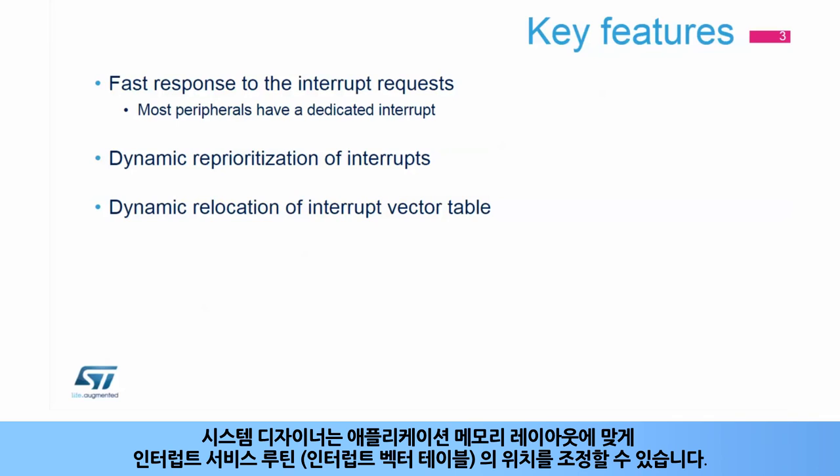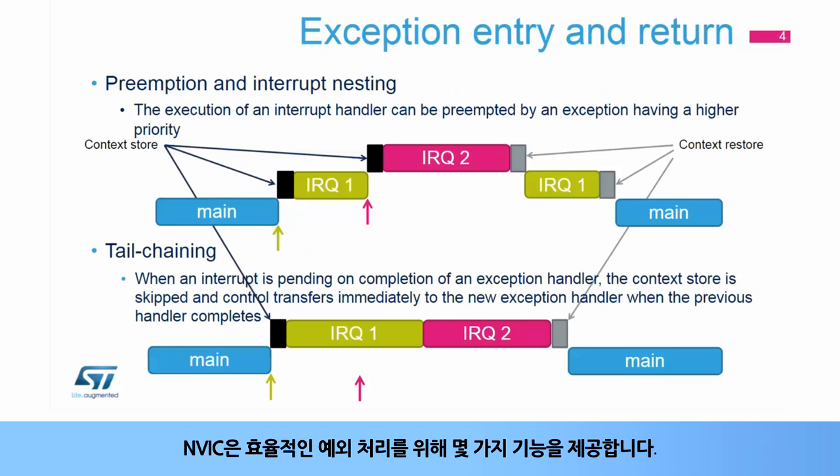The interrupt vector table can also be relocated, which allows the system designer to adapt the placement of interrupt service routines to the application's memory layout. The NVIC provides several features for efficient handling of exceptions.